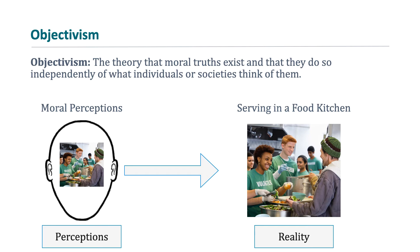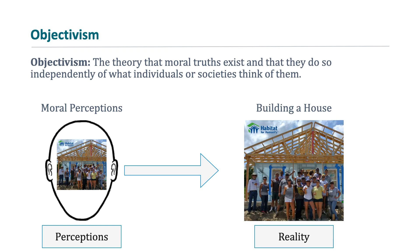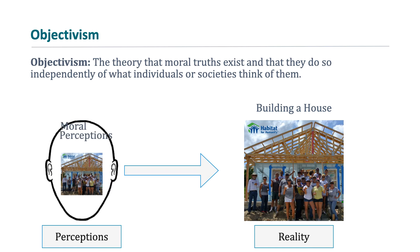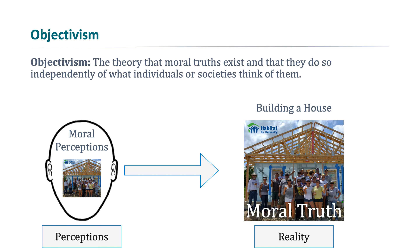our moral perception of that event might be to say that it is a morally good thing for someone to do with their time. The moral objectivist wants to say that assessment — that serving in a food kitchen is good — is not just something that exists inside your thoughts or emotions, but that you have that moral sense because there is a moral reality outside of what you think, feel, or believe. Similarly, if we're building a house for Habitat for Humanity, there's actually a moral reality in the external world that our perceptions correspond to, in a similar way to which sense perceptions correspond to a real physical world.